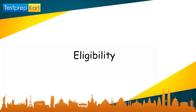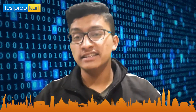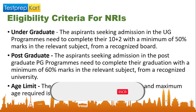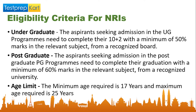The eligibility for undergraduate courses is very basic: you should have Physics, Chemistry, and Math in Class 12th for B.Tech courses, and you should have passed Class 12th with a minimum of 50 percent aggregate. Students appearing in Class 12th this year can also apply, but at the time of counseling they must have their Class 12th result with at least 50 percent marks.